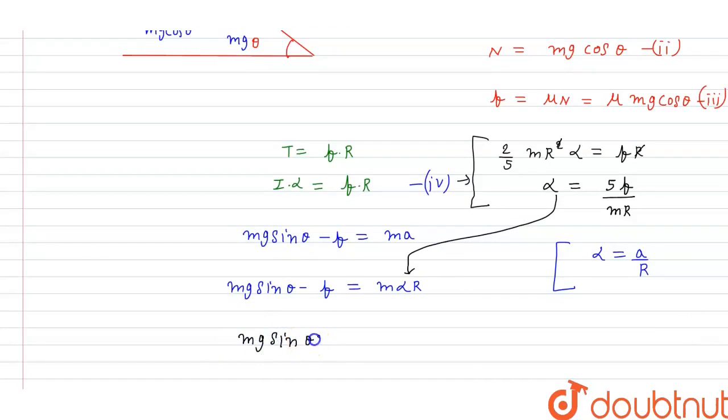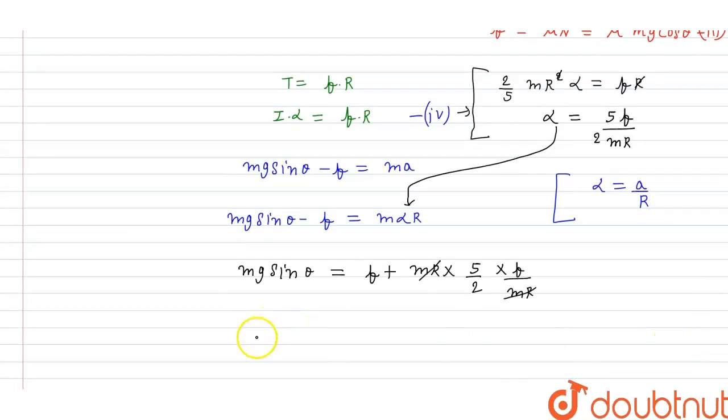Mg sin theta is equal to F plus M into R into alpha is 5 by 2 into F divided by M into R. M into R got cancel out. So the left part is Mg sin theta is equal to F plus 5 by 2 F which is equal to 7 by 2 F.